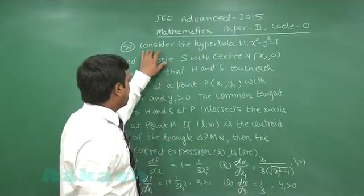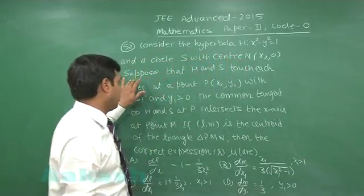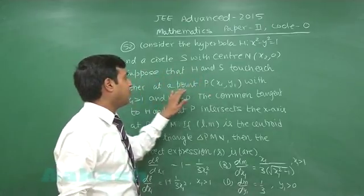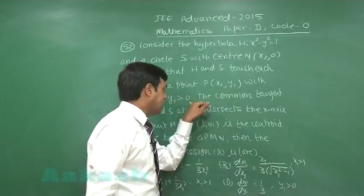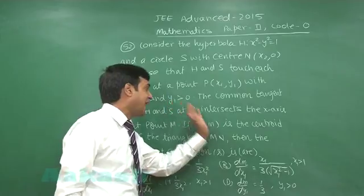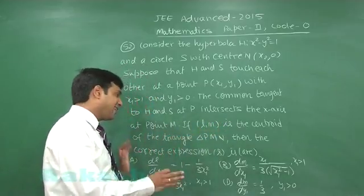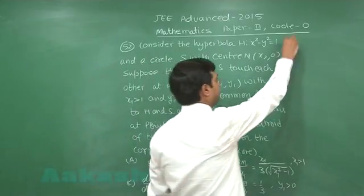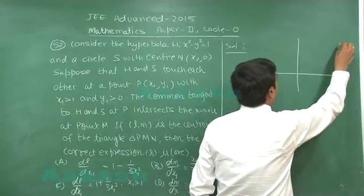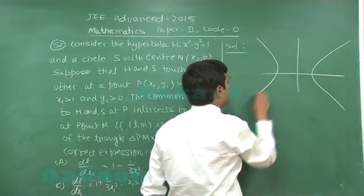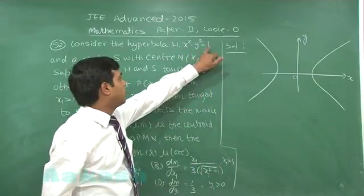Question number 52: consider the hyperbola H — x² − y² = 1 — and a circle S with center N at (x₂, 0). Suppose H and S touch each other at point P(x₁, y₁) with x₁ > 1 and y₁ > 0. The common tangent to H and S at P intersects the x-axis at point M. If L is the centroid of triangle PMN, we must identify the correct expressions from the four given options.